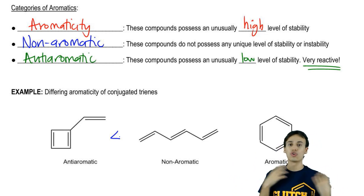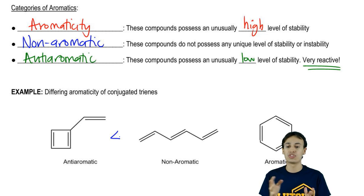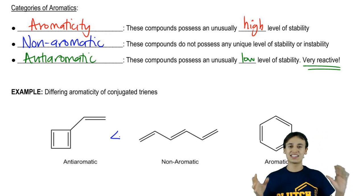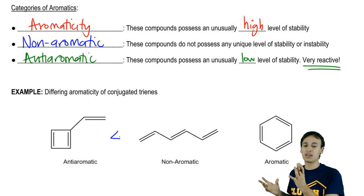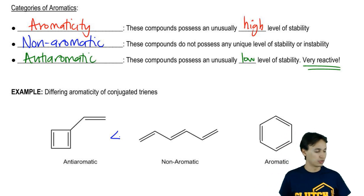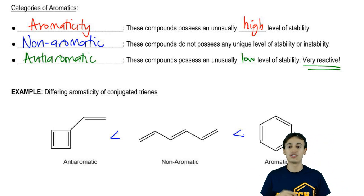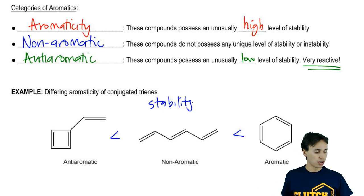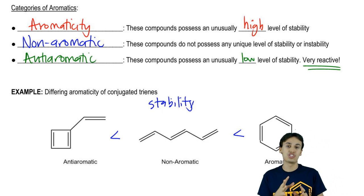Then we have nonaromatic. Nonaromatic is just normal. That would just be a normal molecule that we would have discussed in a previous chapter, normal stability. Then finally, we have aromatic, which is just this bad-ass idea that we're going to introduce and that we're going to continue to talk about in the next coming videos. These are very stable, very cool molecules. So I'm going ahead and putting greater than signs to show that stability increases as you move up this spectrum.